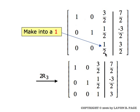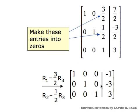We move on to the third column. We have a one-half that we need to make into a one, which we do by multiplying row three by two. Then our final two row operations turn the remaining entries into zeros: row one minus three-halves times row three, and row two minus one-half times row three. At that point, we've solved the system and can read off the solutions as x equals minus one, y equals minus three, z equals three.